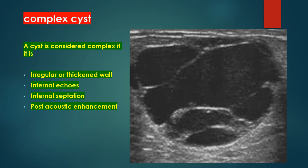Complex cysts. A cyst is considered complex if it has an irregular or thickened wall with internal echoes, internal septation, and posterior acoustic enhancement.